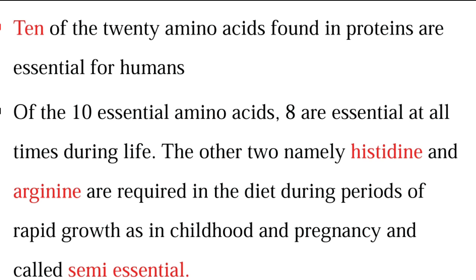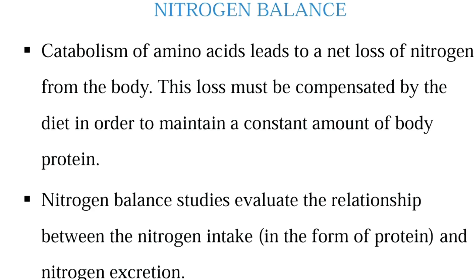The 2 semi-essential amino acids, histidine and arginine, are required during special conditions like childhood and pregnancy. Loss of nitrogen takes place during the normal catabolism of amino acids in our body, and this loss of nitrogen is compensated by diet so that it does not lead to any negative nitrogen balance.